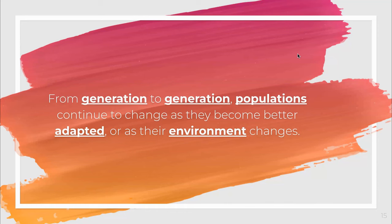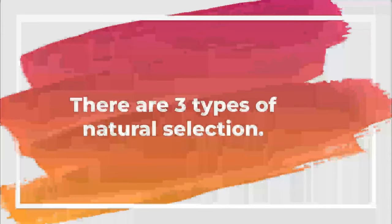From generation to generation, populations continue to change as they become better adapted or as the environment changes. Something to really think about is that natural selection does not make organisms better. Adaptations don't have to be perfect — they have to be just good enough to enable an organism to pass its genes on to the next generation. Natural selection does not make organisms better, but it does change populations, and it changes them in three ways. There are three types of natural selection.